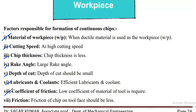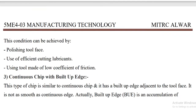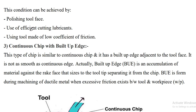Additional factors for continuous chip formation include: efficient lubricants and coolants, low coefficient of friction, and low friction of chip on tool face. Continuous chip can be achieved by using a polished tool face, efficient cutting lubricants, and tools made of low friction material.